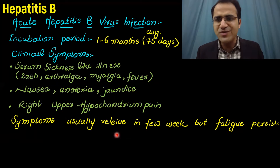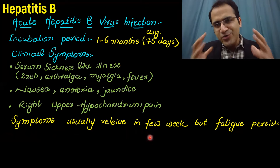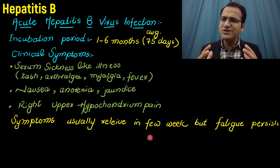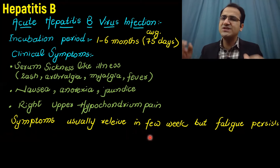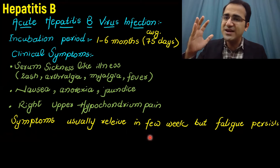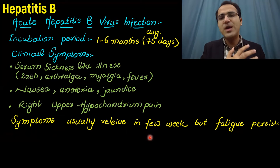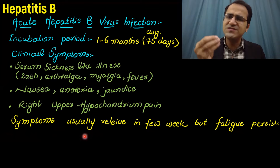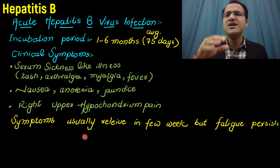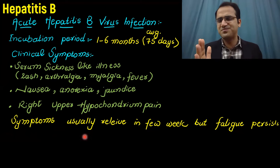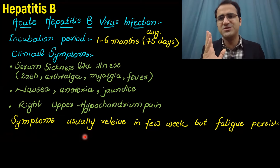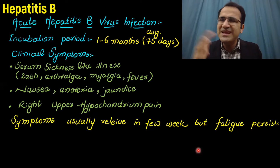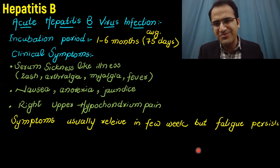Symptoms usually resolve in a few weeks in immunocompetent people, because they have a strong immune response that clears the hepatitis B virus from the body. These patients have symptoms for a few weeks or less than six months — that is acute hepatitis B. In some patients, chronic fatigue and malaise may persist for a longer time.